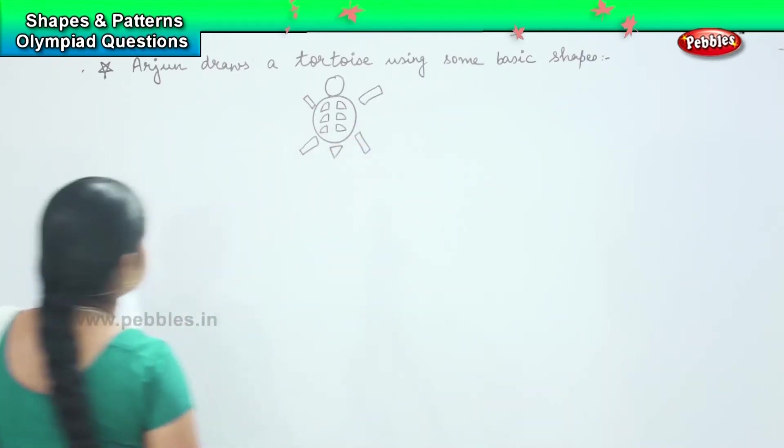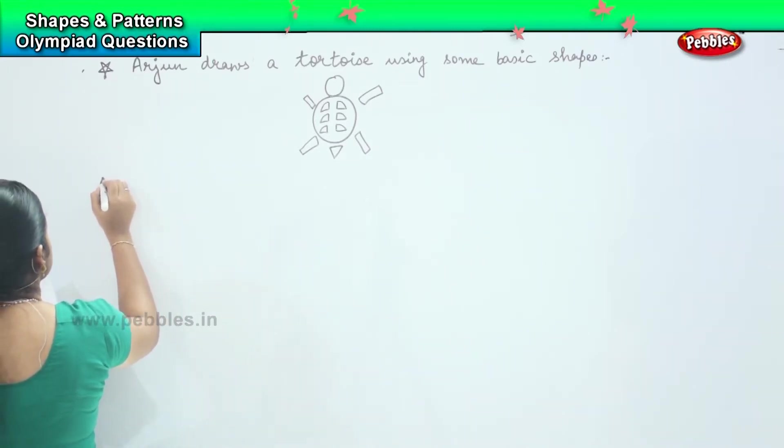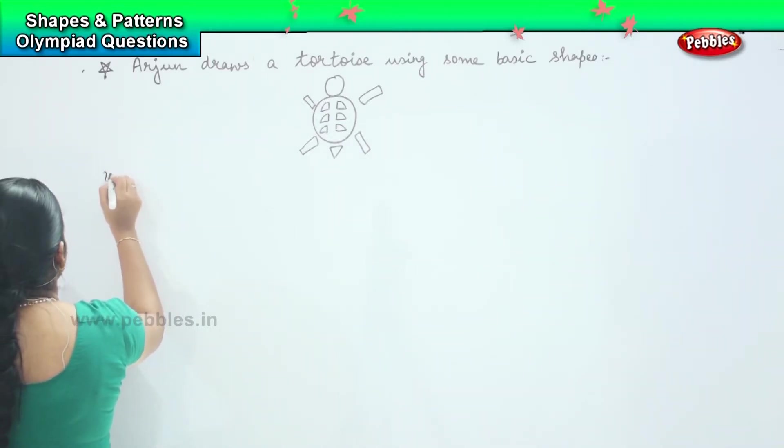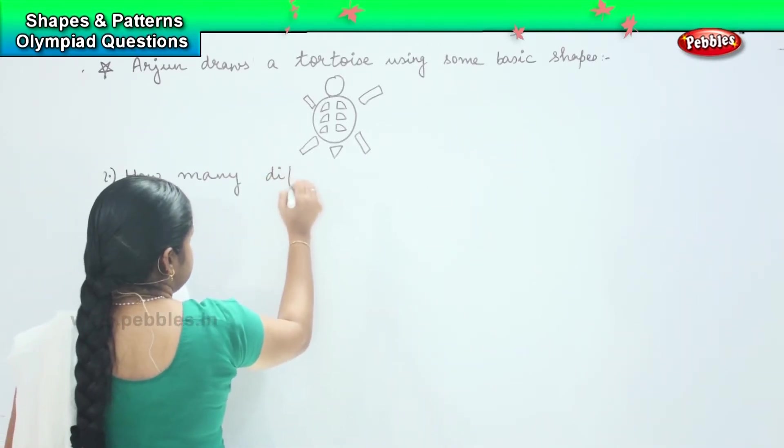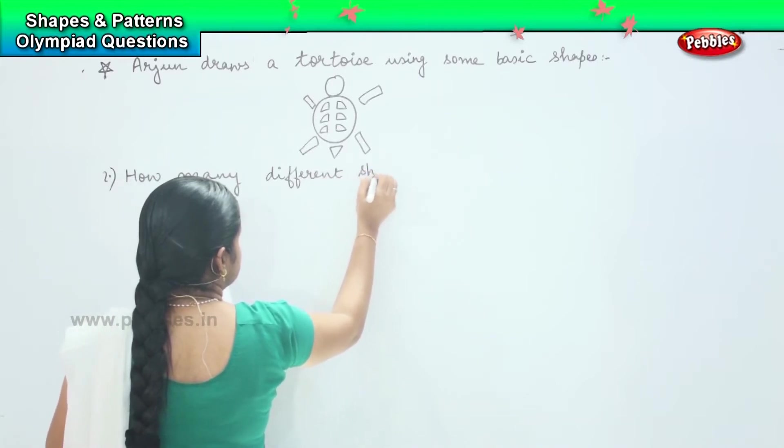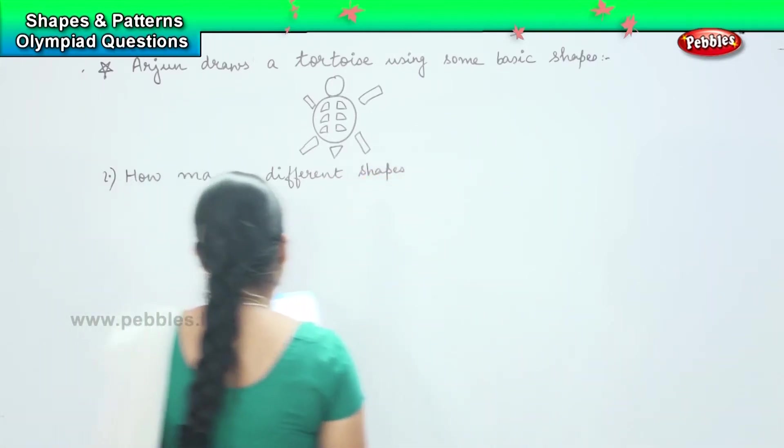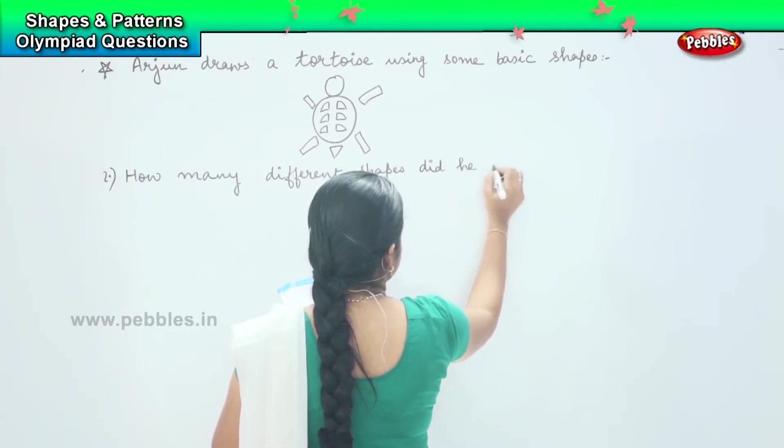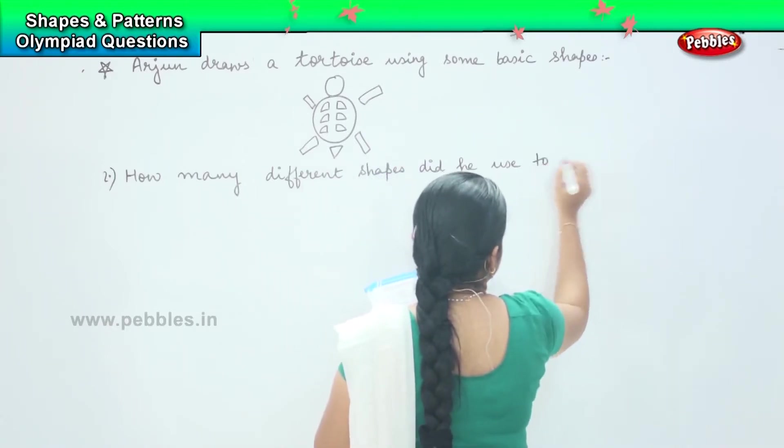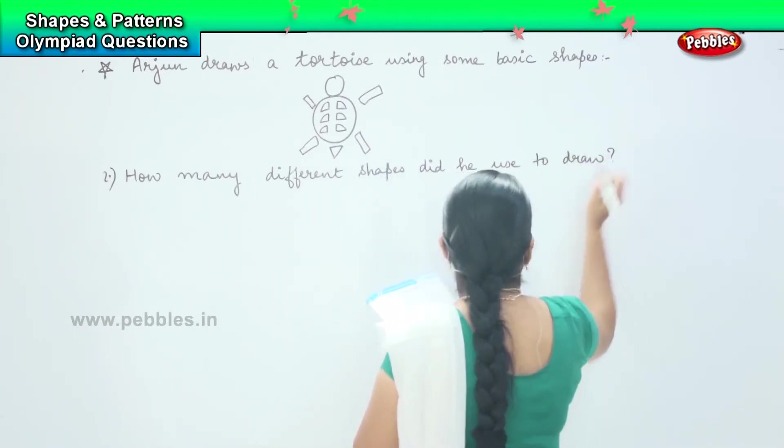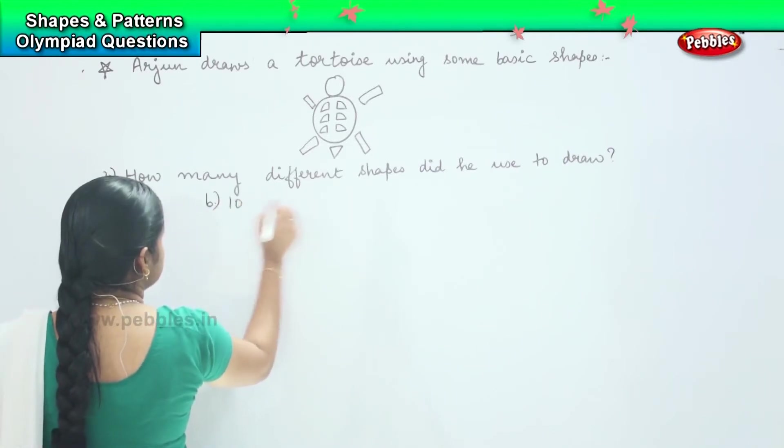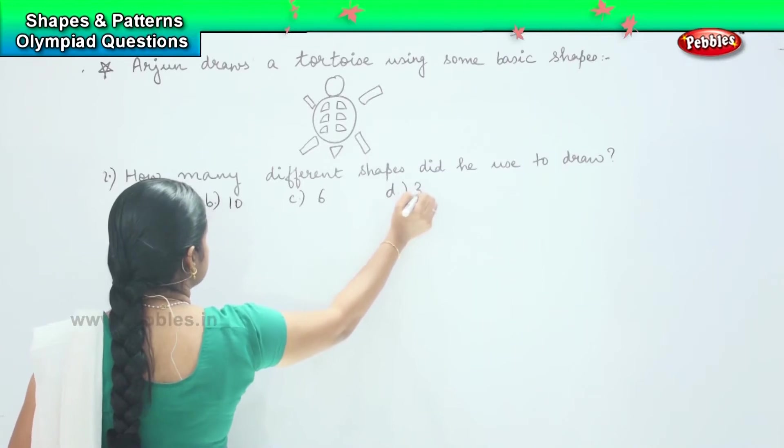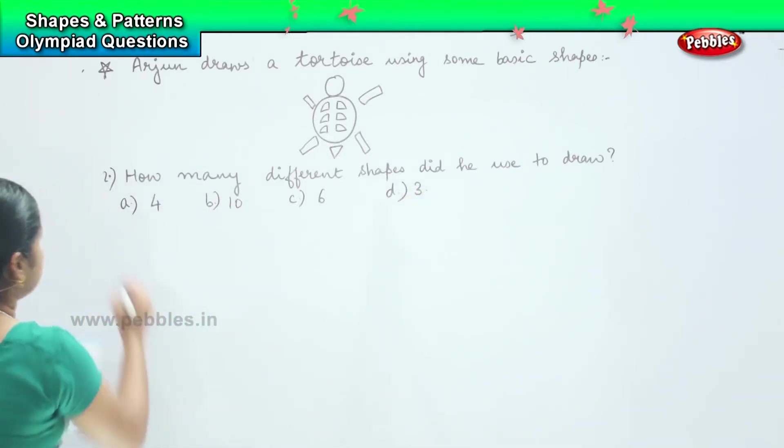So now this is a tortoise which he has drawn. The question is subdivided into three to four categories. So the first question that is asked here is: how many different shapes did he use to draw the diagram? And your options are A) 4, B) 10, C) 6, and D) 3.